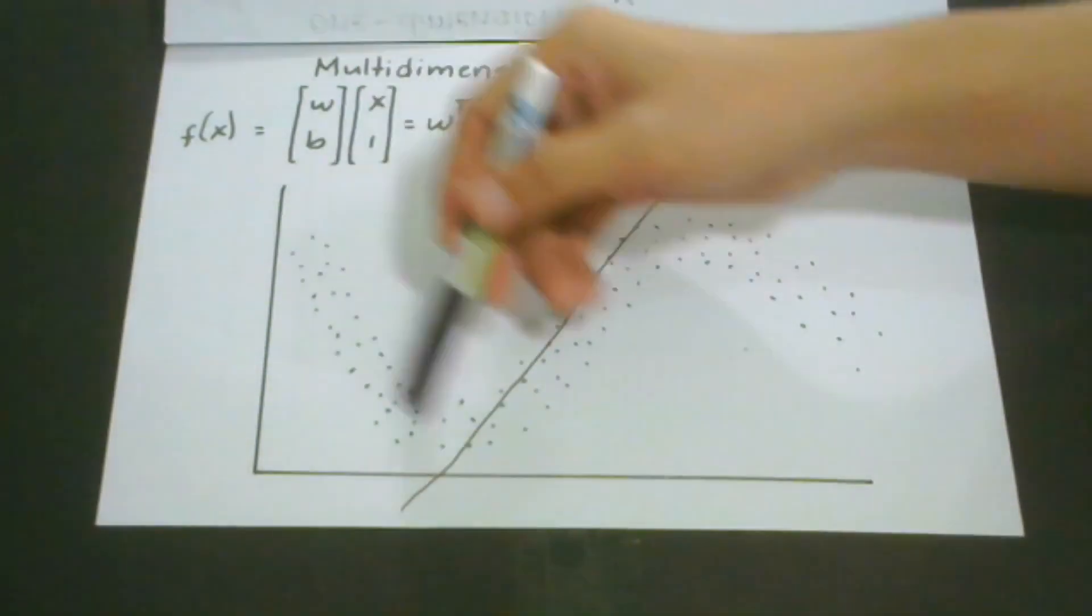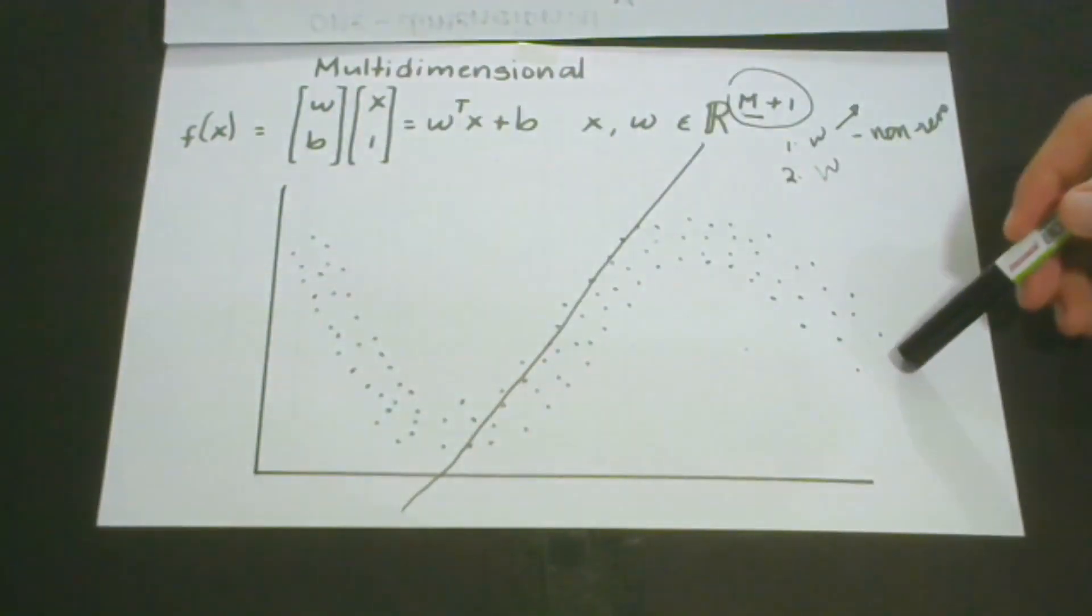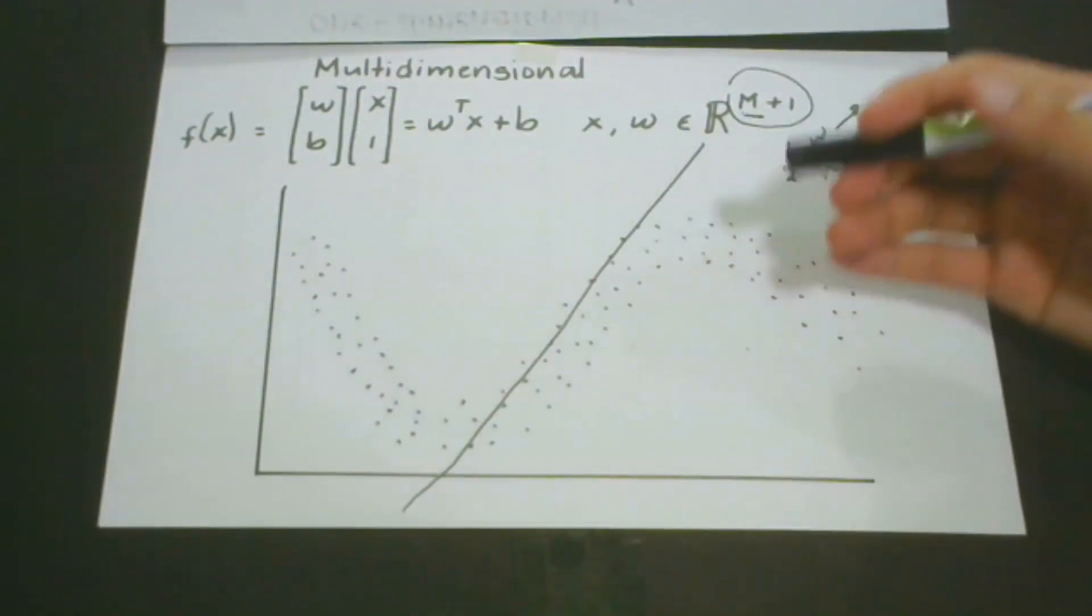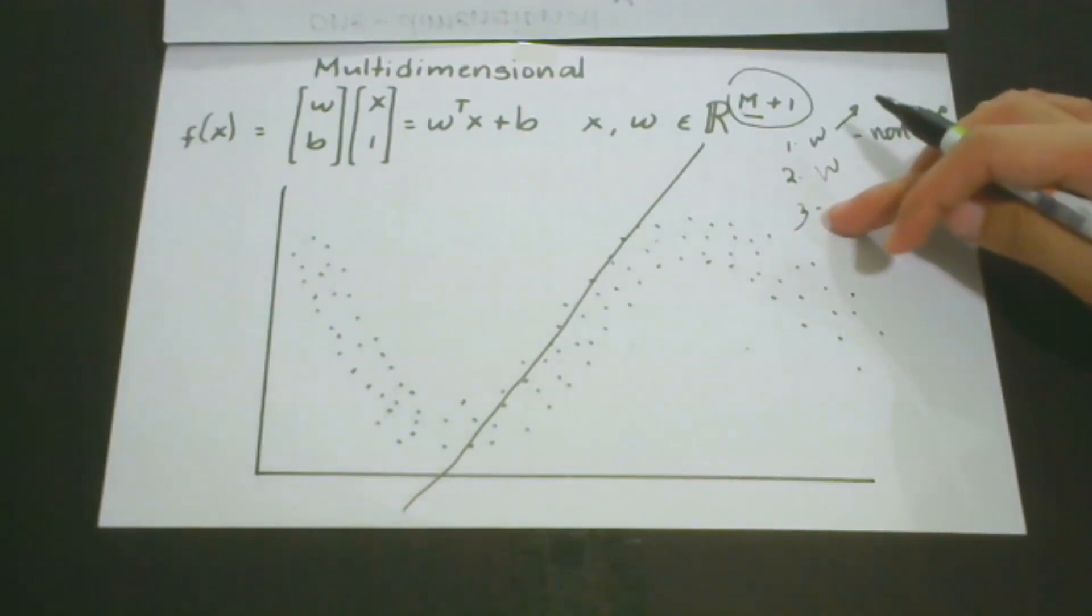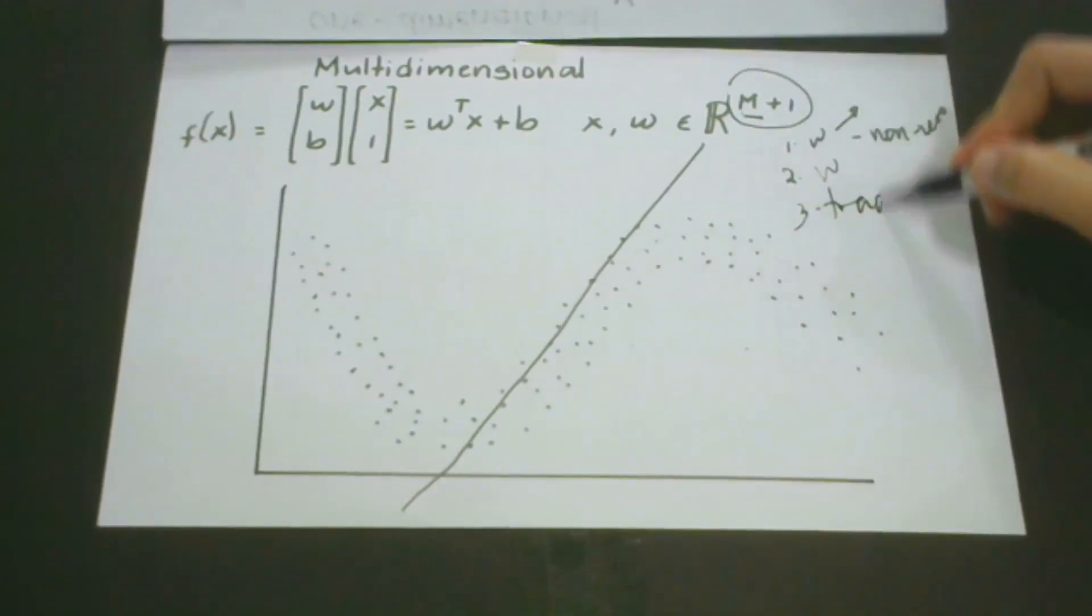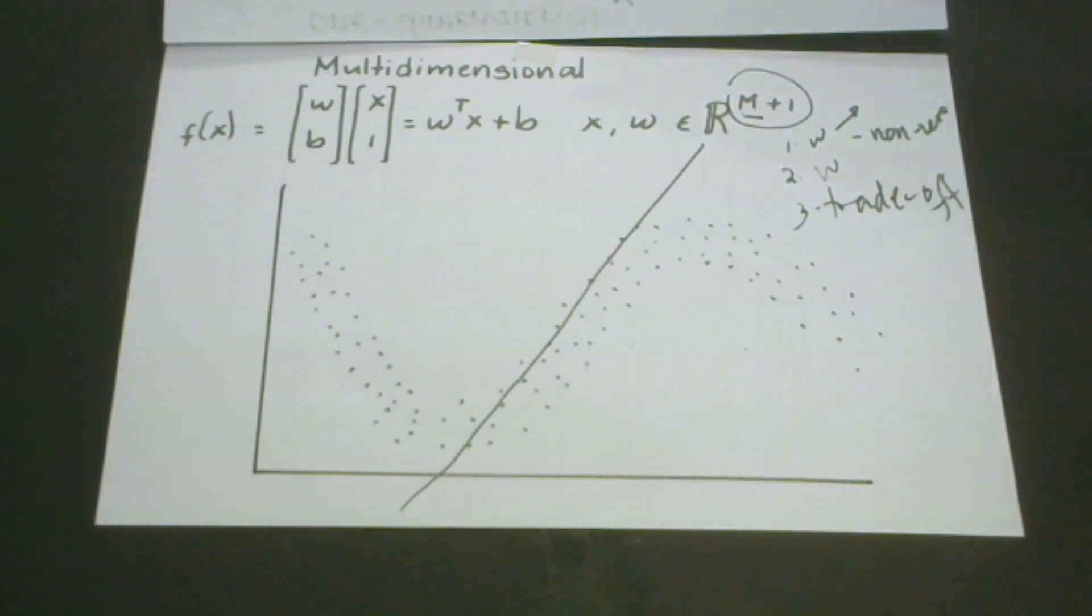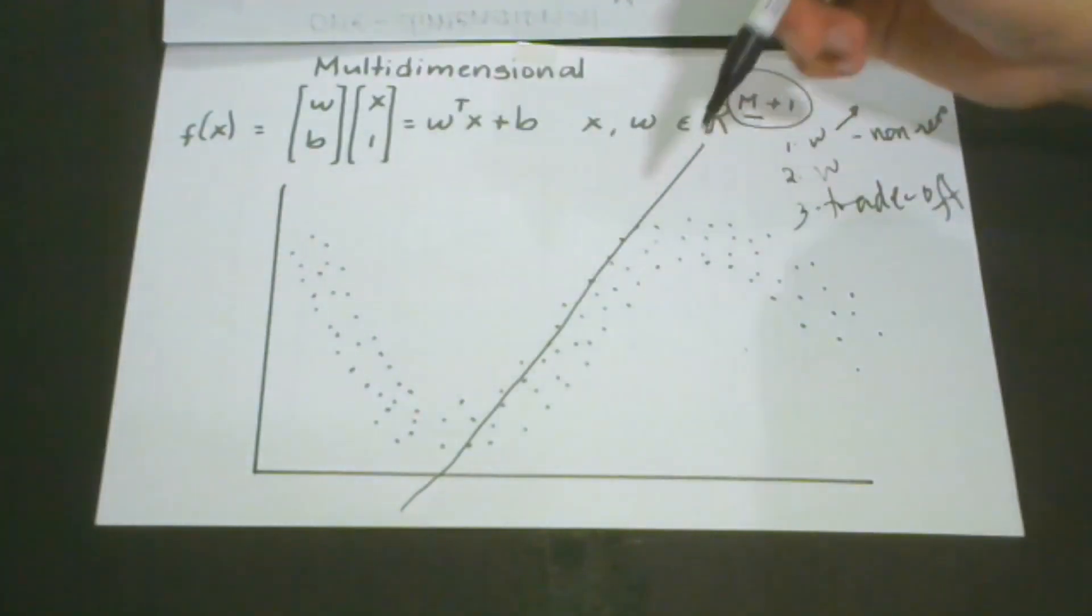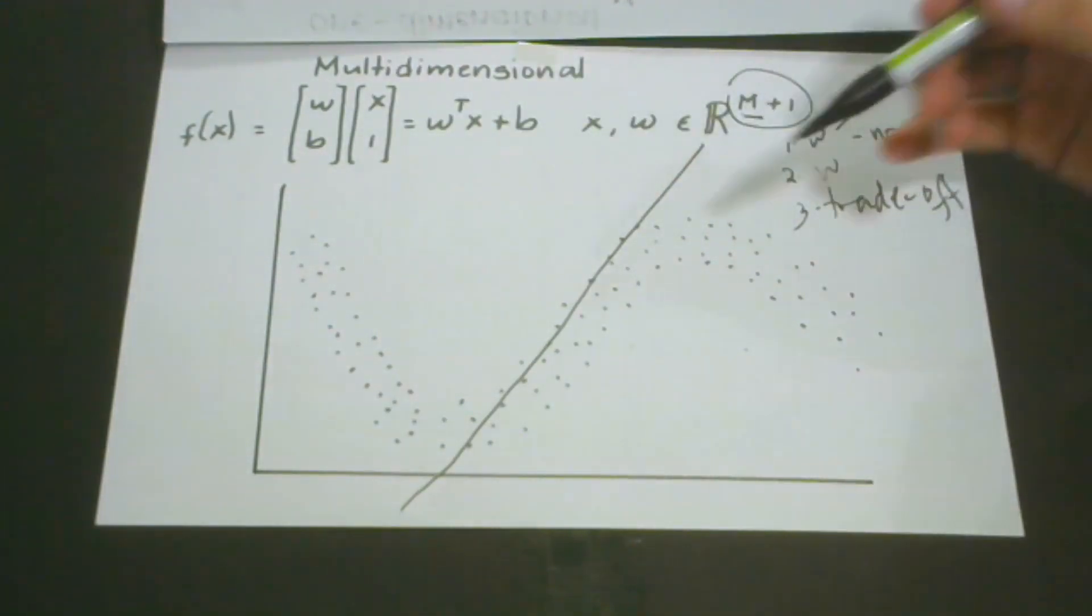Now the question is, what can give us the best fit? It must be something that can give us the best trade-off, which means it can properly describe the trend by producing the best trade-off between the function of flatness and our prediction error. If we draw a line, it must be something like this. With this kind of line, we can say it's the best fit because it may give us proper prediction without underfitting and overfitting.